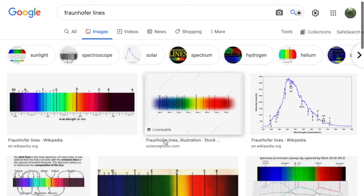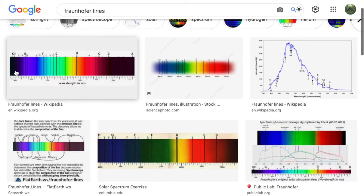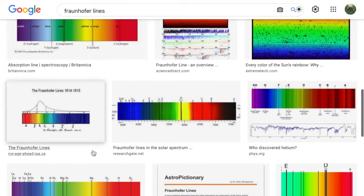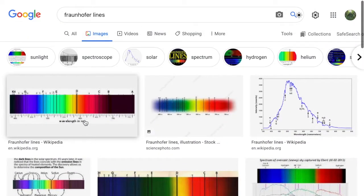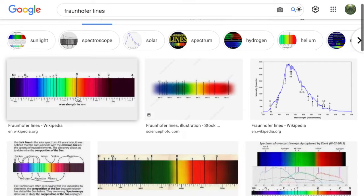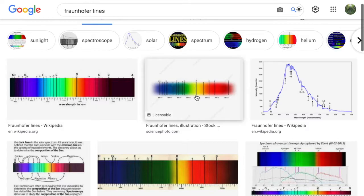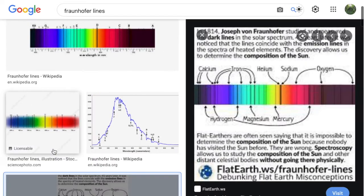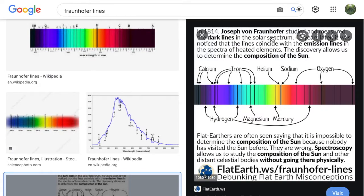Okay, so when you look up Fraunhofer lines, you get a bunch of these images, and these are the spectral lines of the sun. Fraunhofer essentially did the sun, and you'll see different elements too, when you look it up. So here's the Fraunhofer lines, and it's the same, right? You see D right there, D right there, C right there, C right there. So you can see it's all the same spectrum of the sun. Here, take a look at this meme. In 1814, Fraunhofer studied and measured the dark lines in the solar spectrum. 45 years later, it was noticed that the lines coincide with emission lines in the spectra of heated elements. The discovery allows us to determine the composition of the sun. And so you can see, oh, they found this is, these lines mean calcium, these lines mean hydrogen, these mean iron, this means helium, sodium, right?